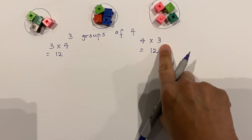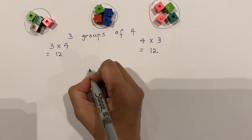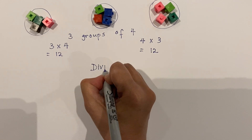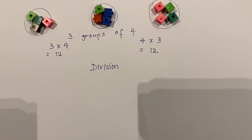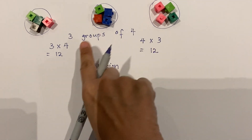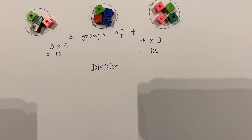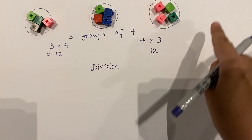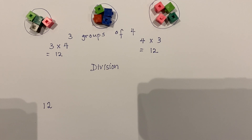Now, how do I link this multiplication fact to division? Multiplication and division are related. If I have three groups of four, or four groups of three, and I ask you to find the total, you can use multiplication. But for division, it's the other way — they always give you the total first.